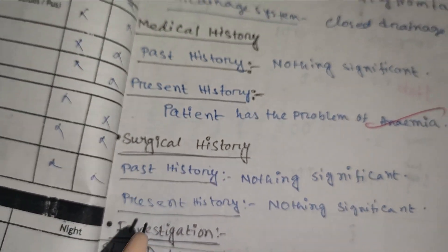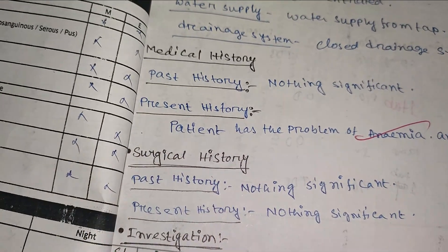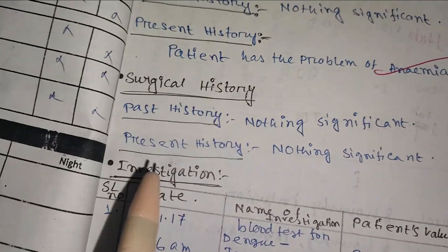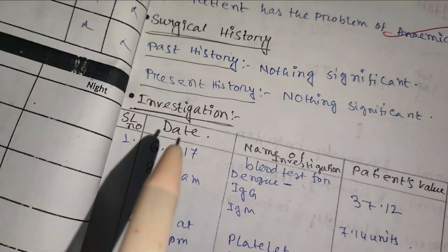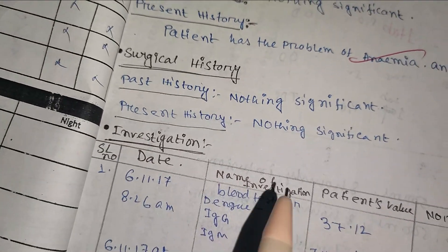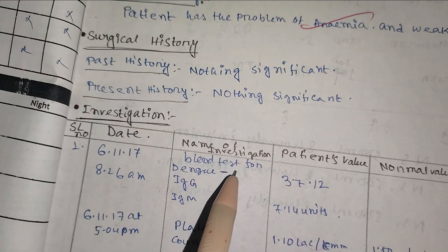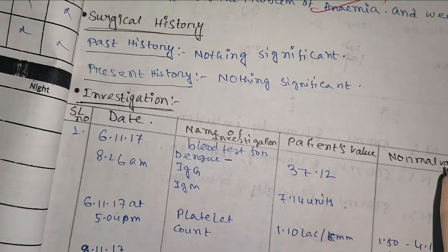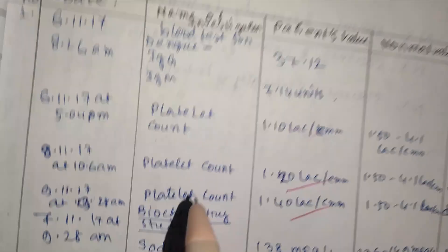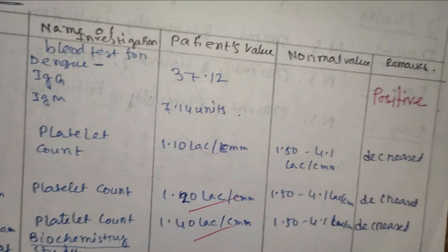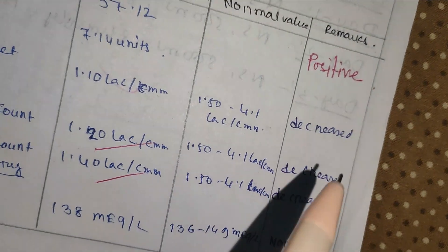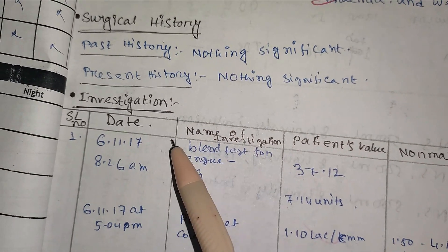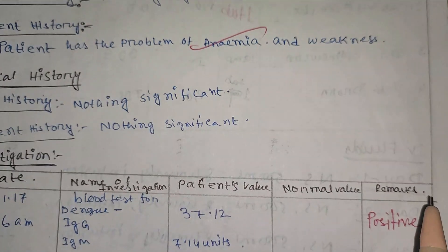After completion of medical history, surgical history, and physical assessment, the next section is investigation. The investigation table has the following headings: serial number, date, name of the investigation, patient's value, normal value, and remarks. Remarks should indicate whether the result is decreased, increased, positive, or negative.